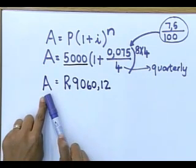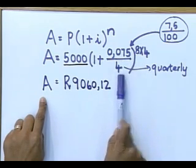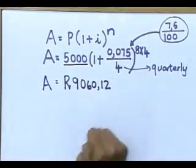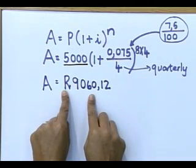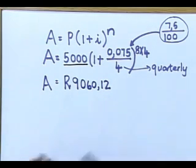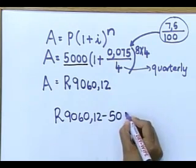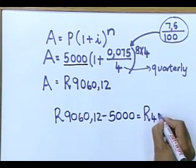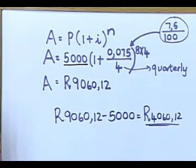This is your future value after depositing 5,000 rand at 7.5% quarterly, with N equal to 32. You divide by four and you times by four. So after eight years you are going to have 9,060 rand and 12 cents. The interest you earned is 9,060.12 minus 5,000 rand. After eight years, you got that much more money — if you're saving, you can get 4,060 rand and 12 cents more than just spending the money.